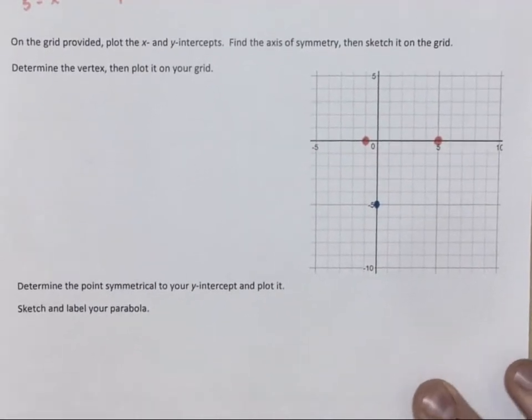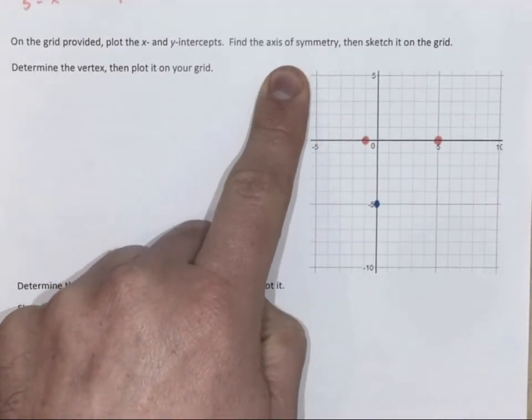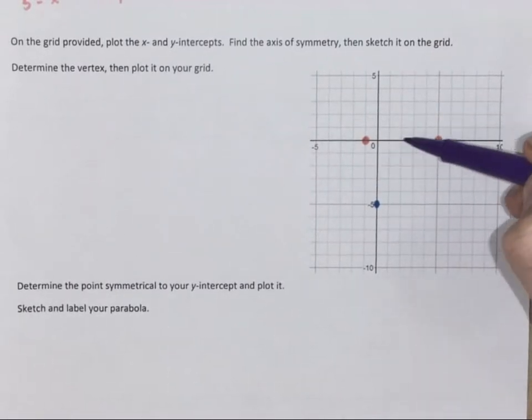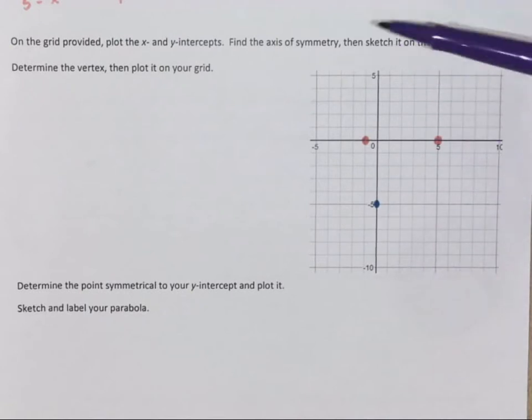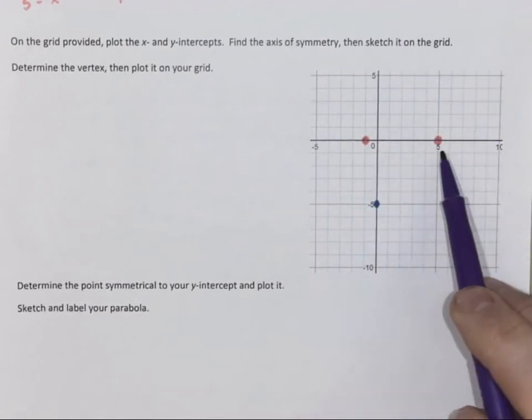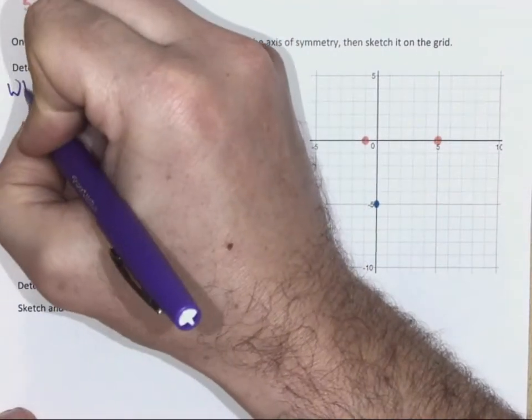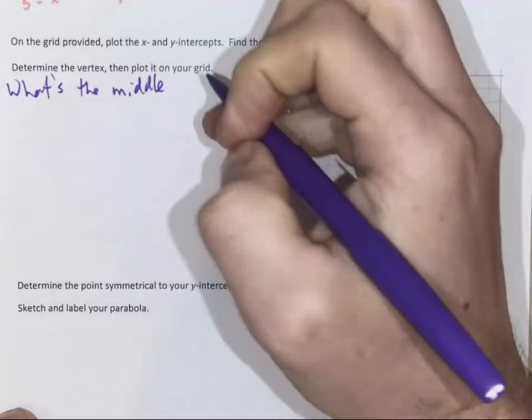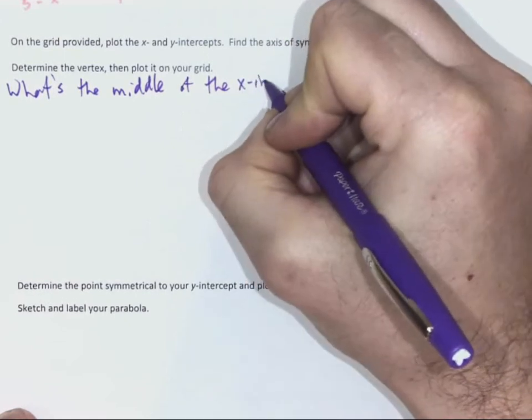I now need to find my vertex. To find my vertex, I want to find the axis of symmetry. From the axis of symmetry, it's going to be halfway between any two points that are at the same height. So if I have the two points negative 1 and 5, my x-intercepts, I need to know what's the middle. And we've used the word before, midpoint. What's the middle of the x-intercepts?